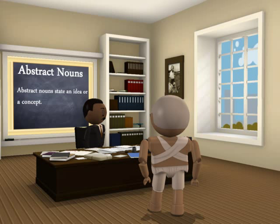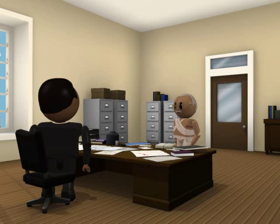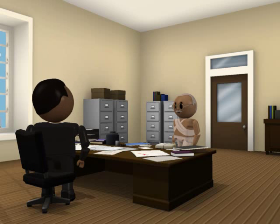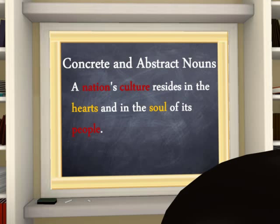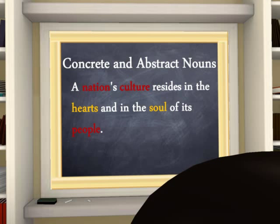You cannot experience an abstract noun with your senses; it states an idea or a concept. Abstract nouns usually represent feelings, ideas, and qualities. Let's look at that sentence again to find the abstract nouns. Let's point out the abstract nouns — they are colored orange: hearts and soul.